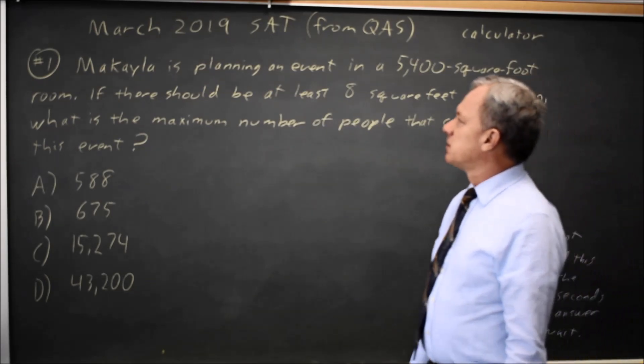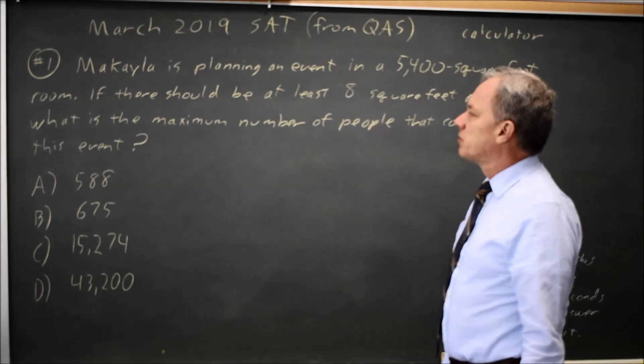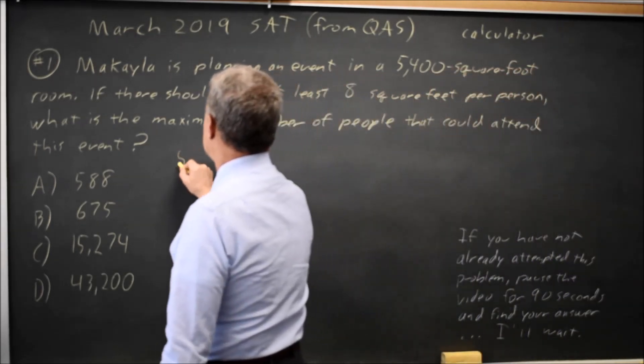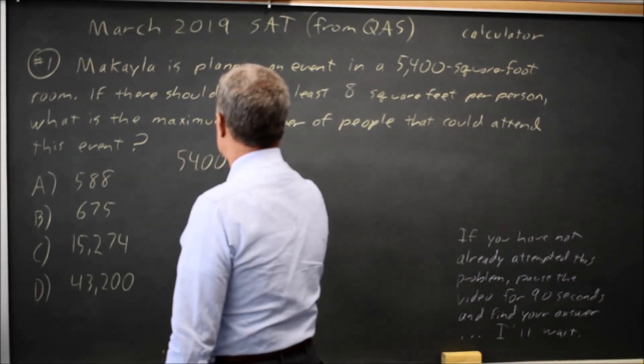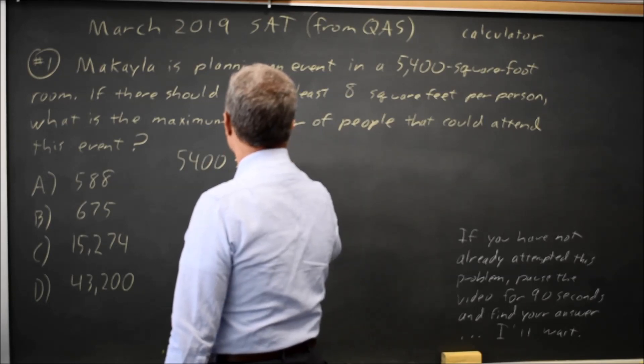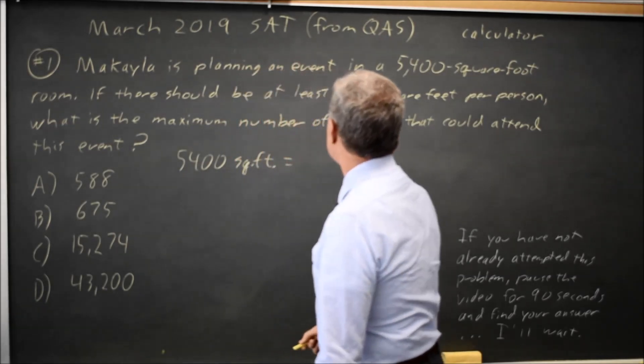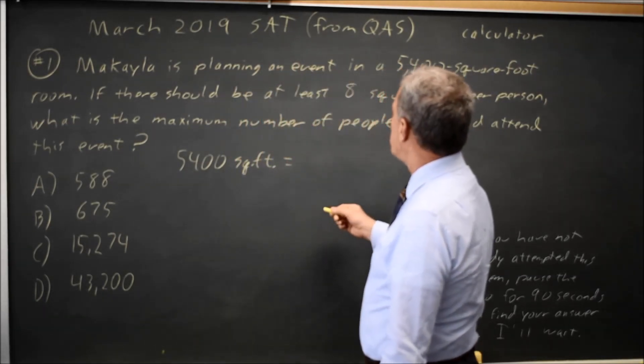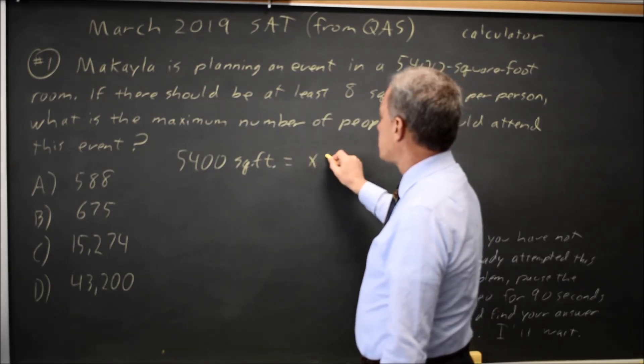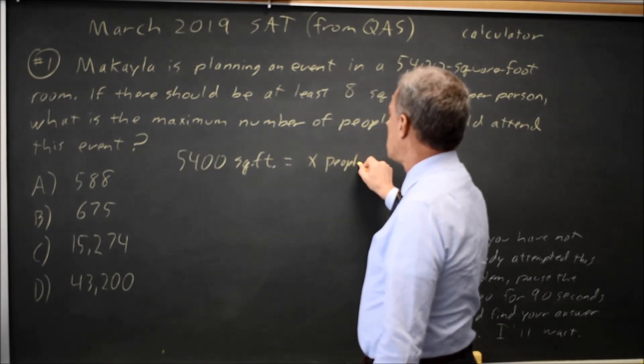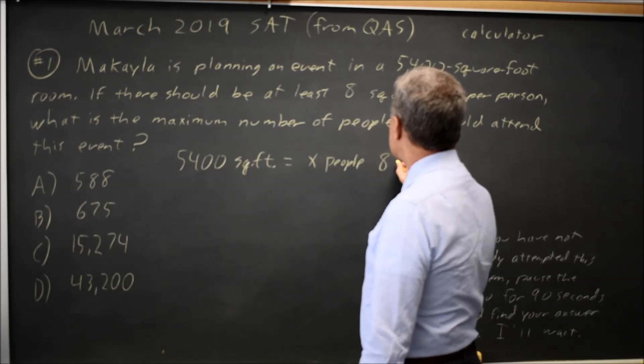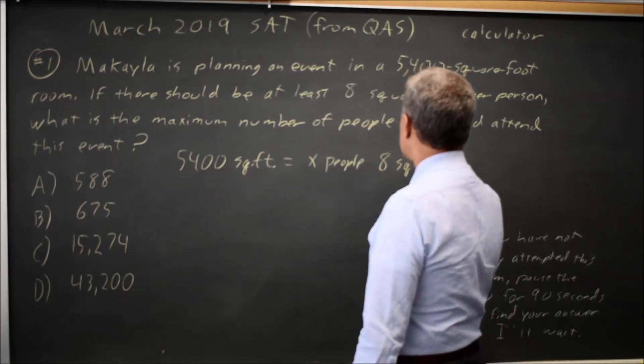Okay, let's take a look at this. We're planning an event in a room with 5,400 square feet. We want to know the maximum number of people, so let's call that x people. And we have 8 square feet per person.